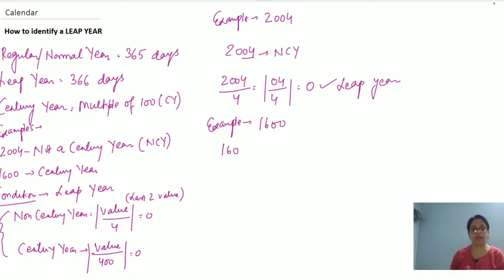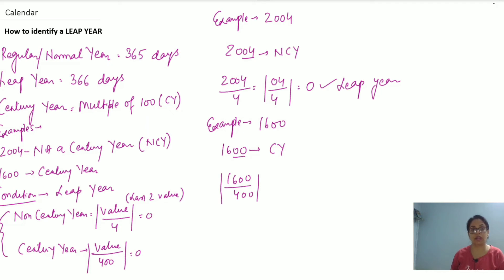Let's take the example of 1600. First, check the last two digits — it is a multiple of 100, so it is a century year. We divide 1600 by 400: the remainder is 0, so yes, 1600 is a leap year.